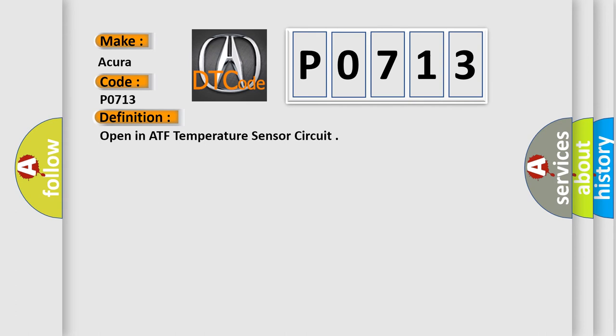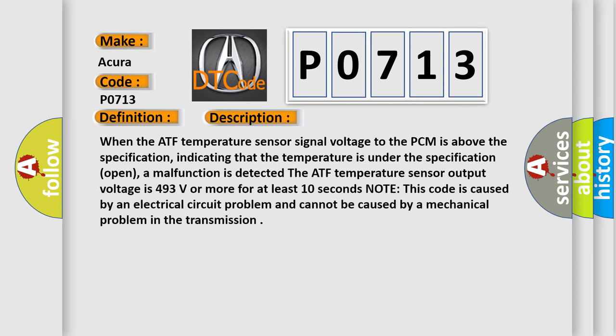And now this is a short description of this DTC code. When the ATF temperature sensor signal voltage to the PCM is above the specification, indicating that the temperature is under the specification open, a malfunction is detected. The ATF temperature sensor output voltage is 4.93 volts or more for at least 10 seconds.